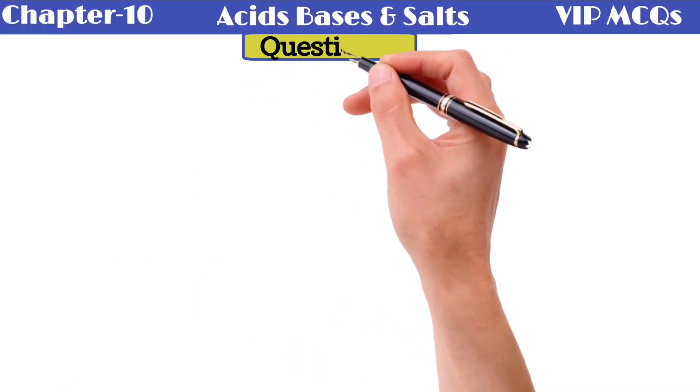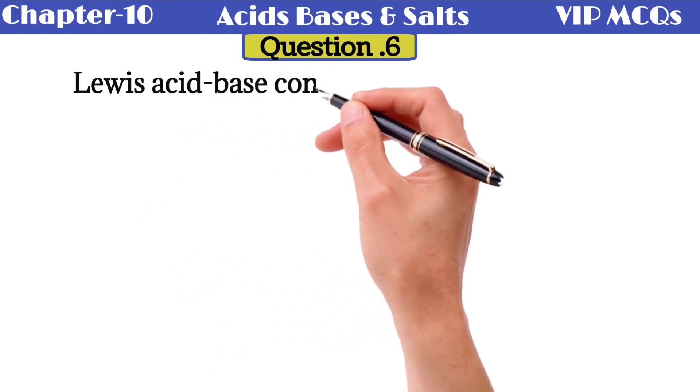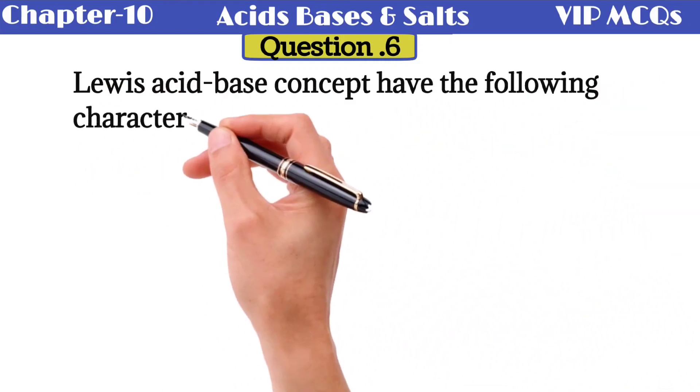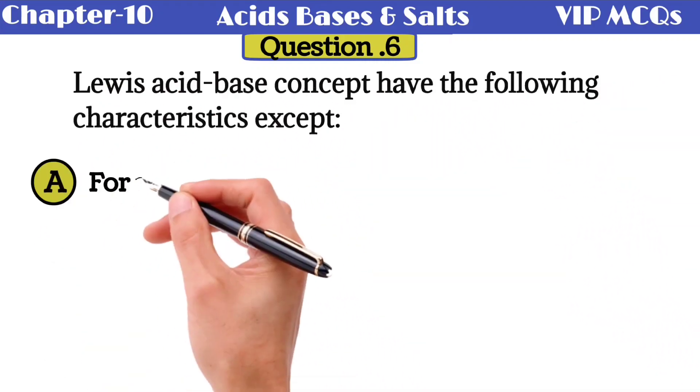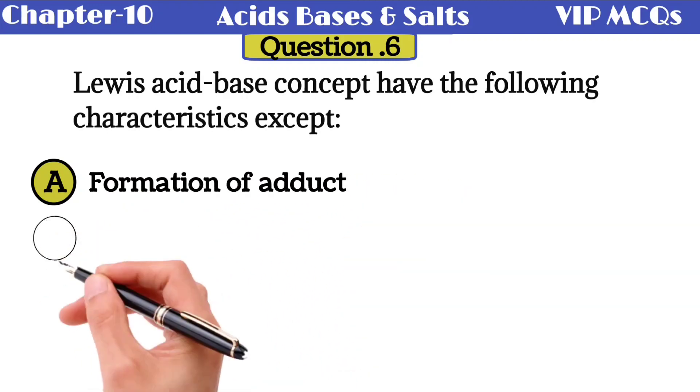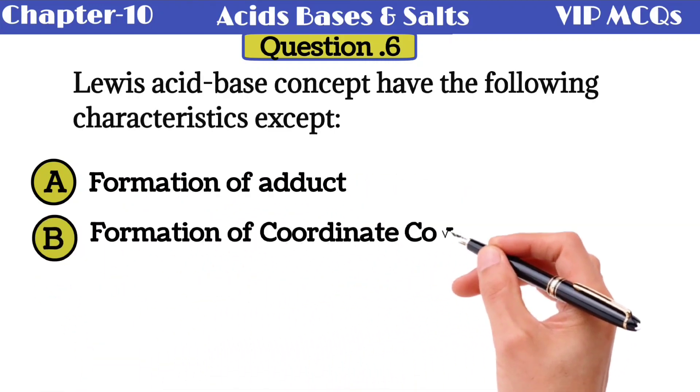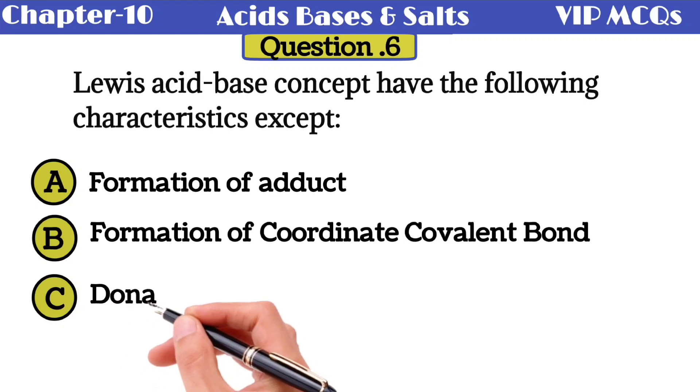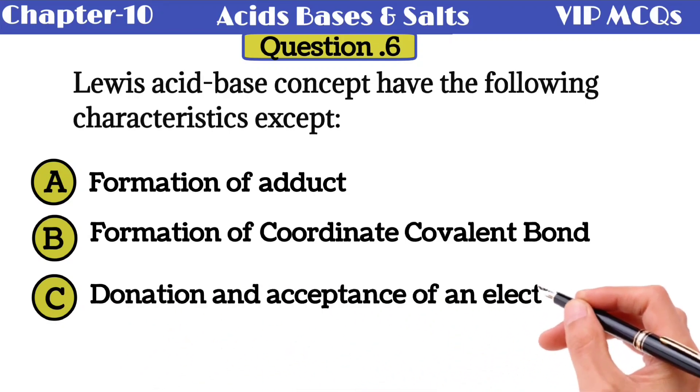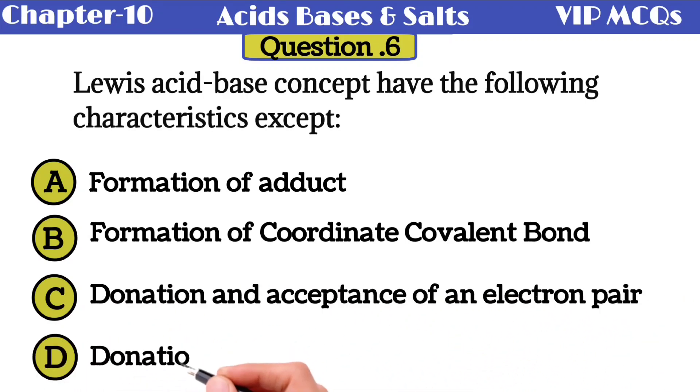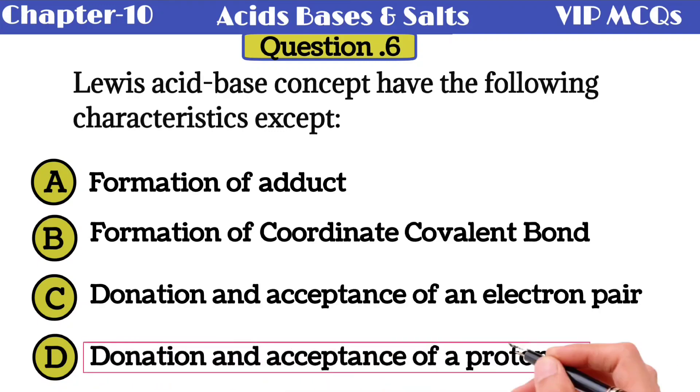Question 6: Lewis acid base concept has the following characteristics except - option A formation of adduct, option B formation of coordinate covalent bond, option C donation and acceptance of an electron pair, option D donation and acceptance of a proton. The correct option is donation and acceptance of a proton.